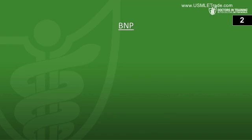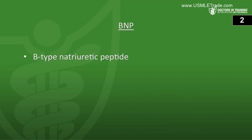Next: what is BNP, and how is it useful in cases of heart failure? BNP is B-type natriuretic peptide, or brain natriuretic peptide. It's a hormone that's stored in the ventricular myocardium, and it's released when the myocytes are excessively stretched, such as when ventricular diastolic pressure rises. So BNP levels in the blood will be elevated in heart failure, and it's useful as a diagnostic test.